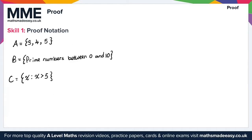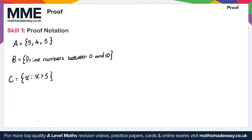There are different variations of an equal sign that you need to be aware of. The first example is an equal sign with a slash through the middle — you may be familiar with this. This simply means not equal to.